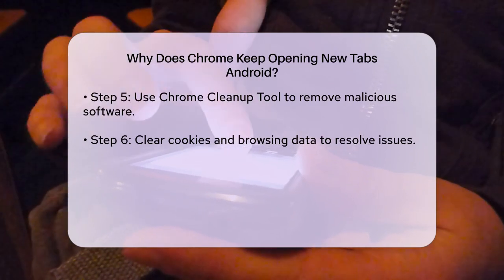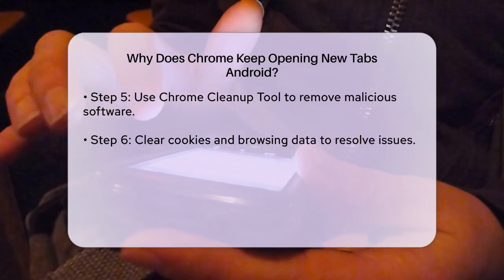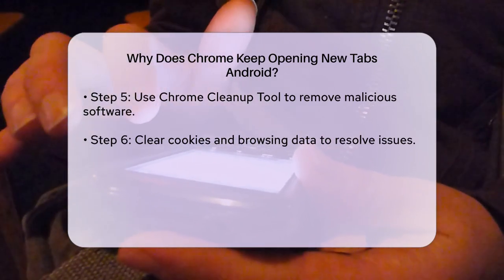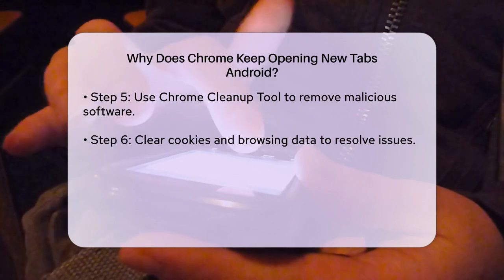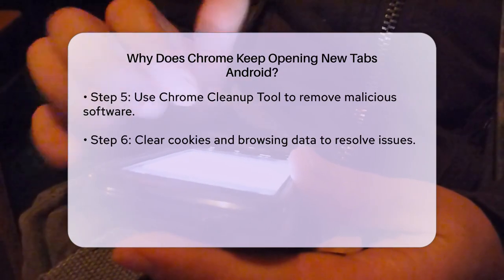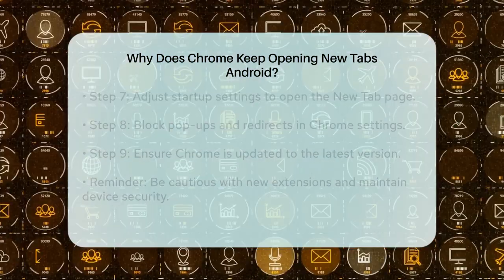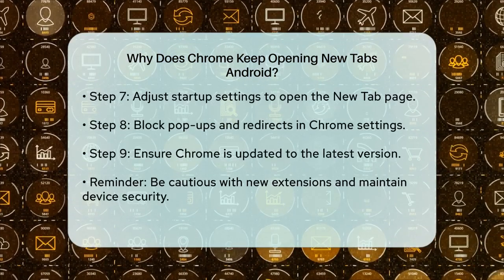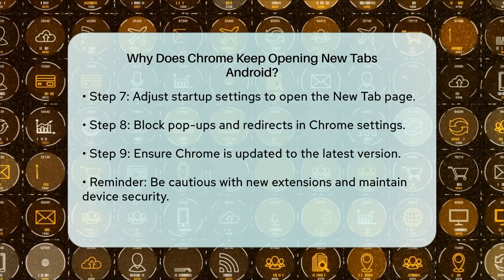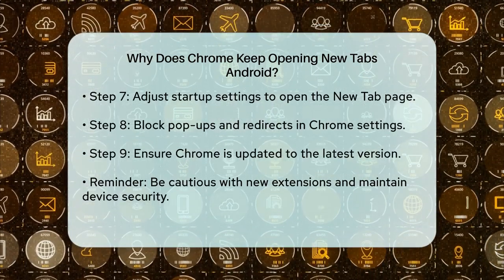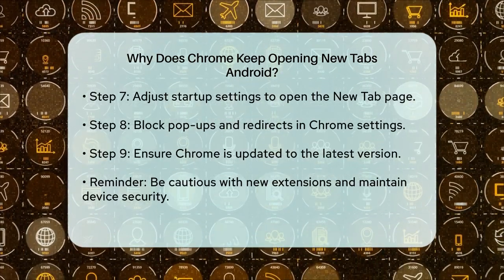Pop-ups and redirects can also cause new tabs to open. To block these, go to Chrome Settings, select Site Settings under Privacy and Security, and then set Pop-ups and Redirects to Blocked (Recommended).